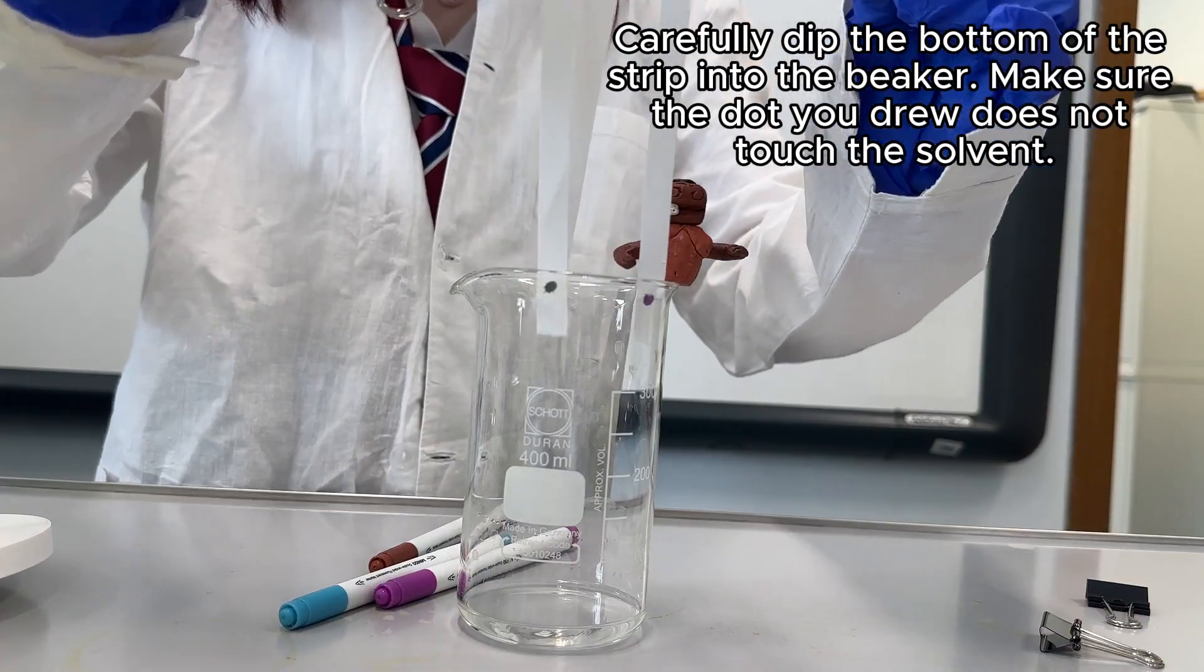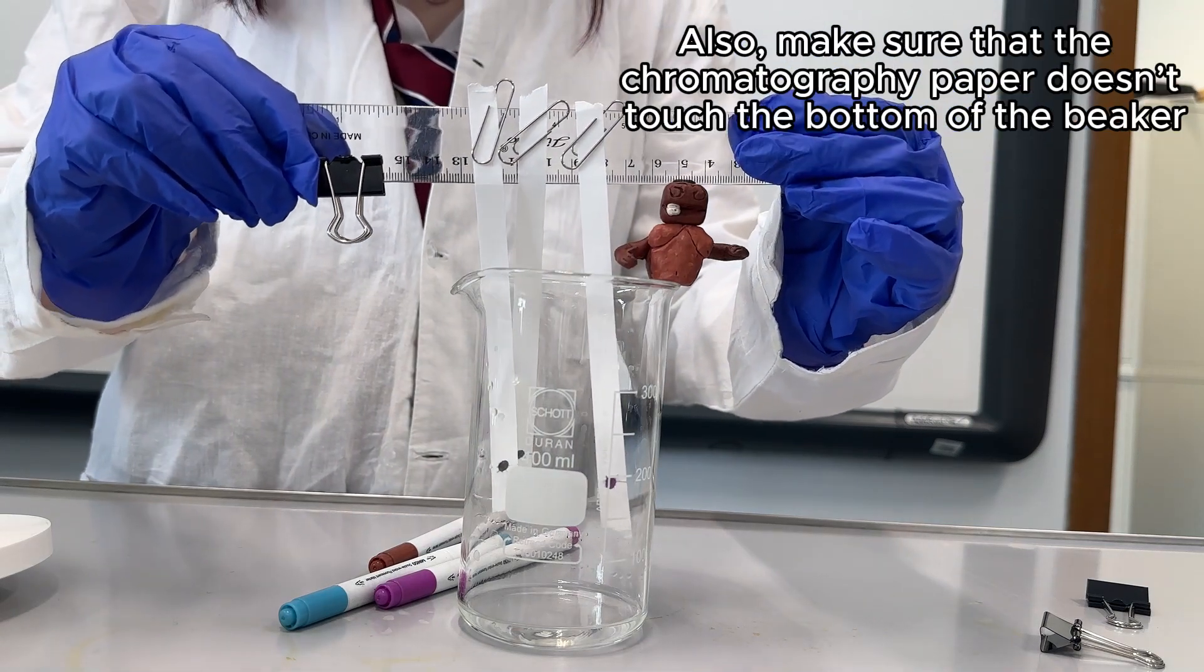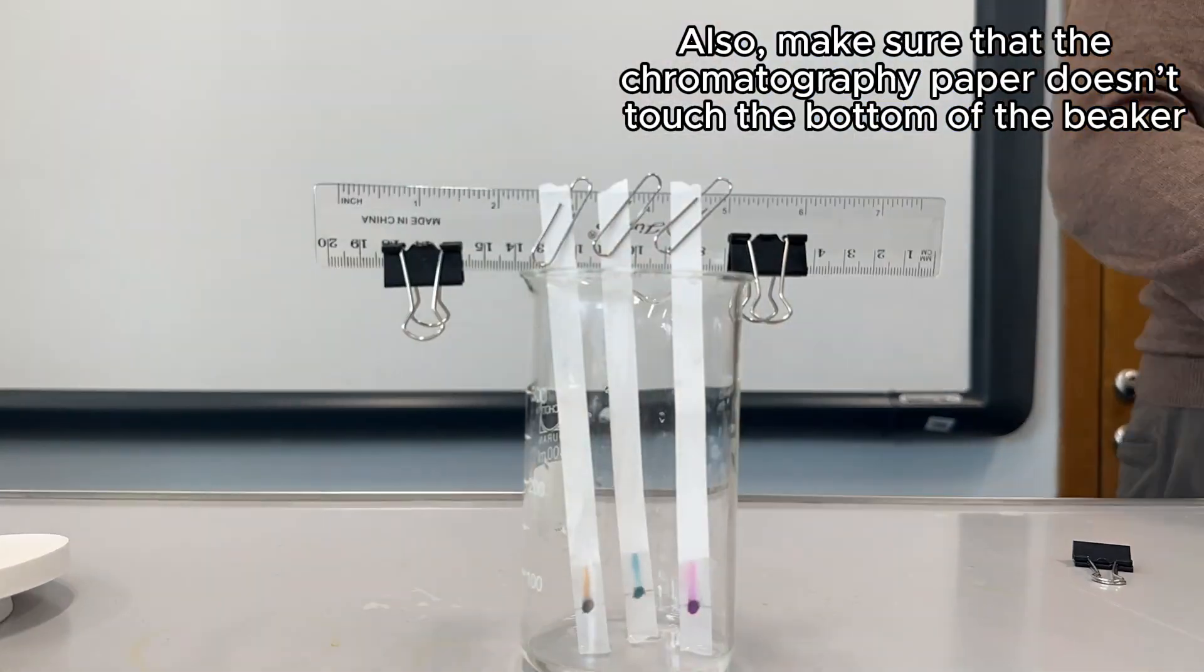Carefully dip the bottom of the strip into the beaker. Make sure the dot you drew does not touch the solvent. Also, make sure that the chromatography paper doesn't touch the bottom of the beaker.